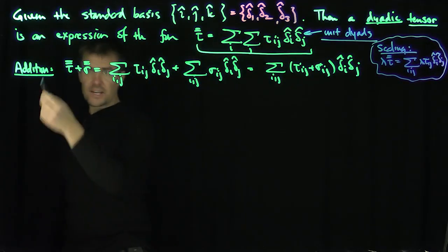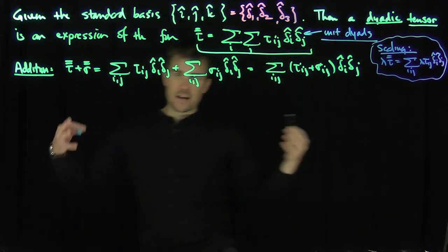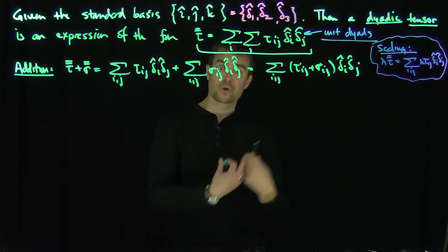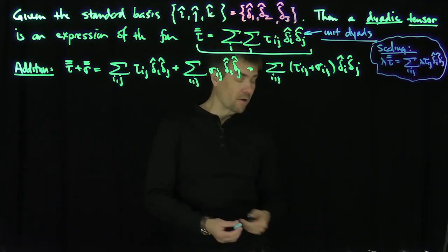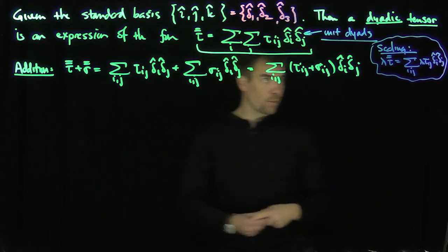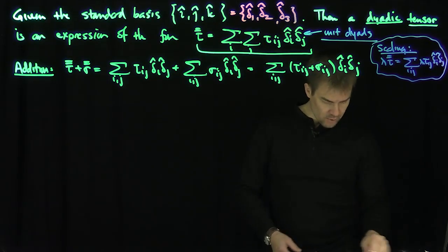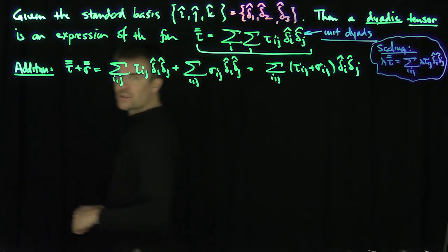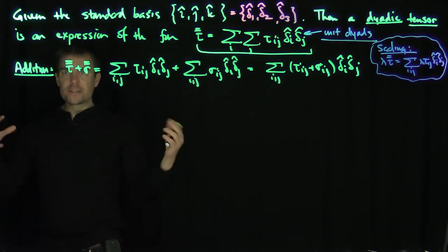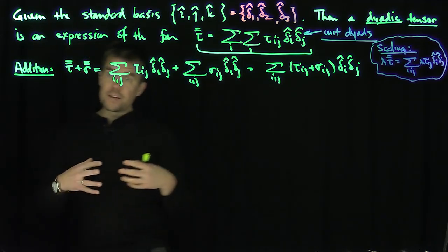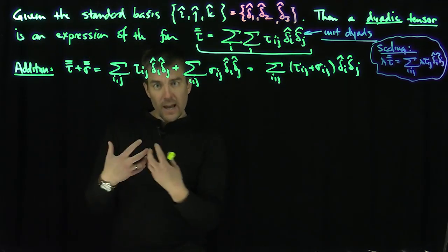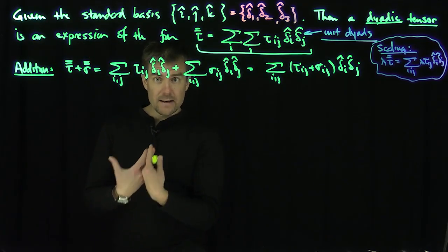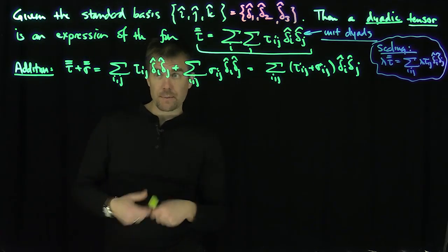With this addition and this scaling, the space of dyadic tensors forms a vector space structure over ℝ. And so now I want to examine some of the multiplications or contractions that can exist on these spaces.